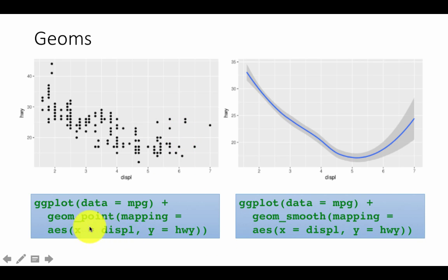So this plot would be generated by geom_point. And of course, we already know the aesthetic is x is displacement, y is highway. We know that. This is using the same aesthetic, x is displacement, y is highway, but the geom that it's using is geom_smooth.